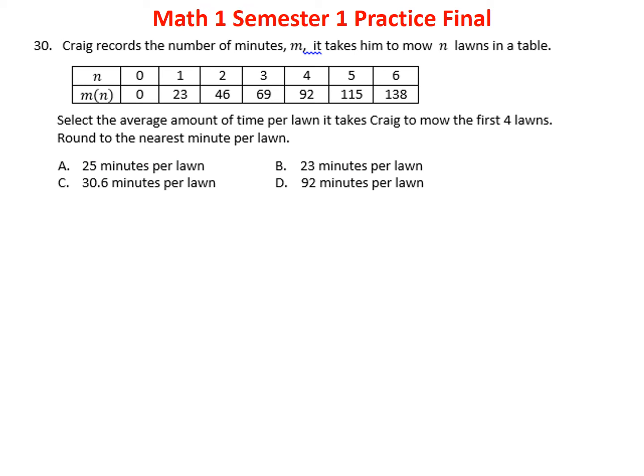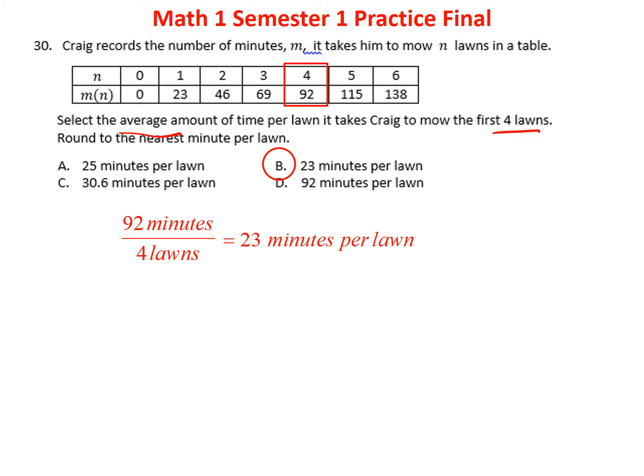Problem thirty: Craig records the minutes to mow lawns. He wants the average time for his first four lawns, completing them in 92 minutes total. The average is simply 92 divided by 4 lawns, which is 23 minutes per lawn. The answer is C.